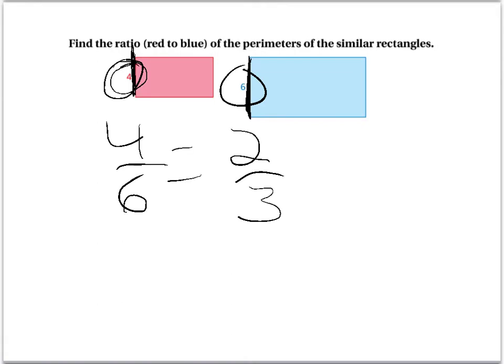So, this side to this side is 2 thirds of a ratio. So basically, what this is saying is the perimeter of this thing is 2 thirds the size of that. Obviously, one whole thing would be identical. It's 2 thirds the size of the blue one.